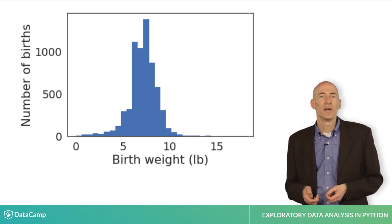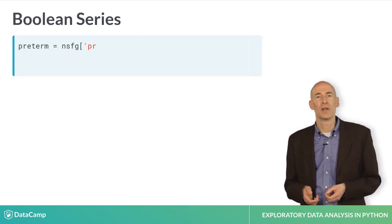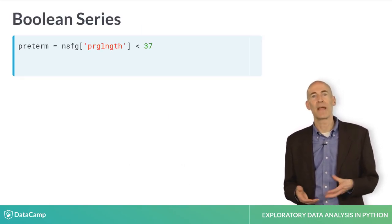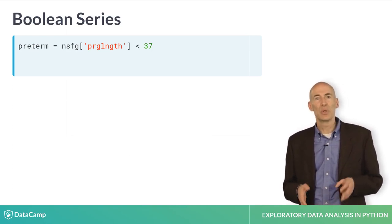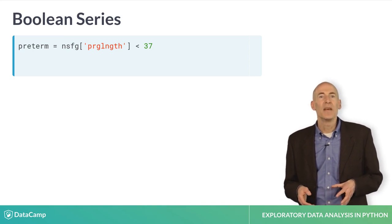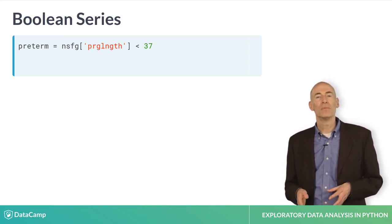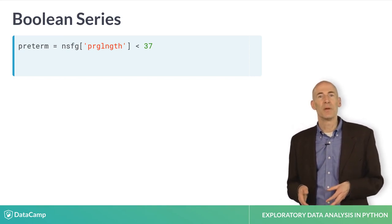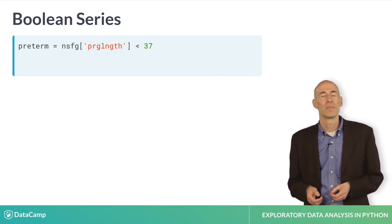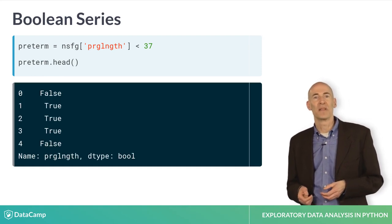To see which babies are preterm, we can use the preg length column, which records pregnancy length in weeks. When you compare a series to a value, the result is a Boolean series. That is, each element is a Boolean value, true or false. In this case, it's true for each preterm baby, and false otherwise. We can use head to see the first five elements.